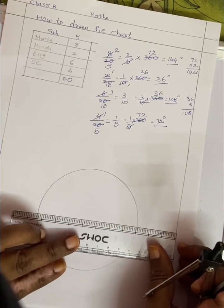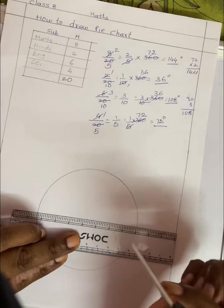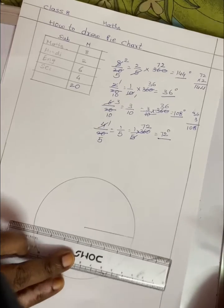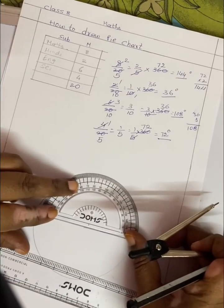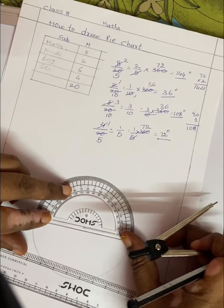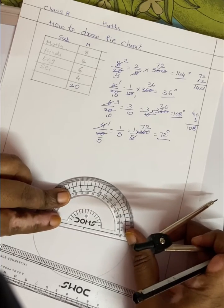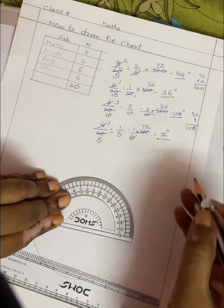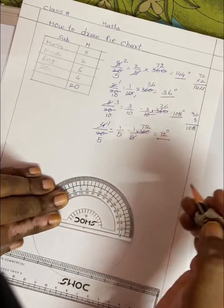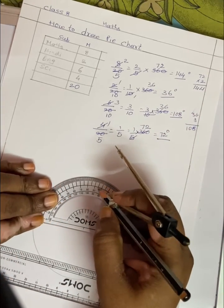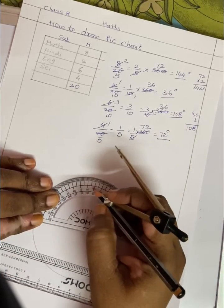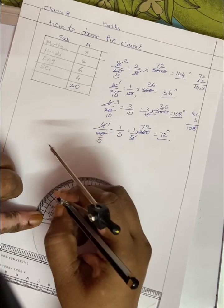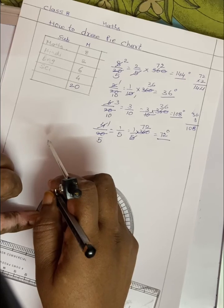From the center, draw a straight line. The first angle is 144 degrees for Math. Since it is greater than 90, we will go to the left side — 144 degrees.